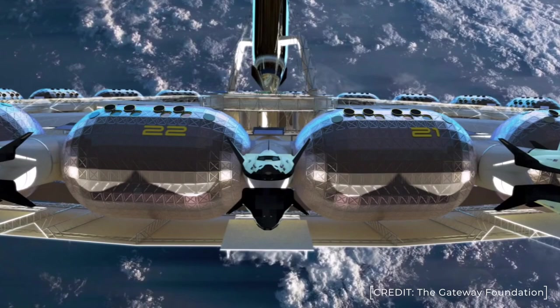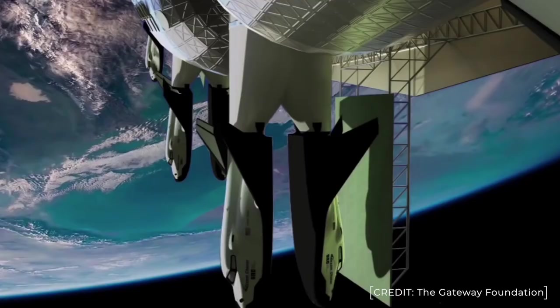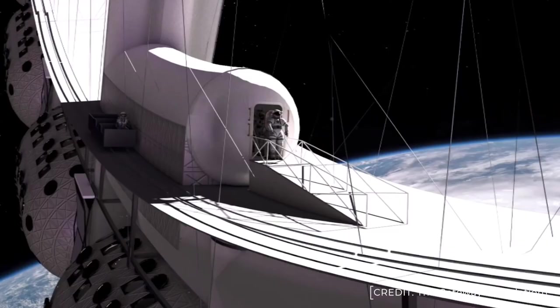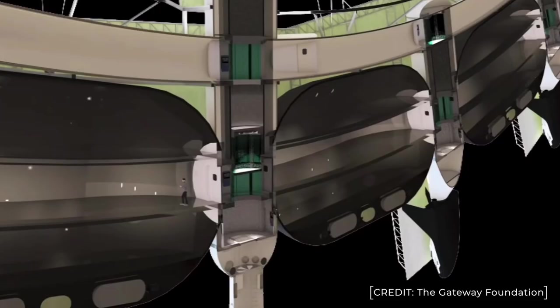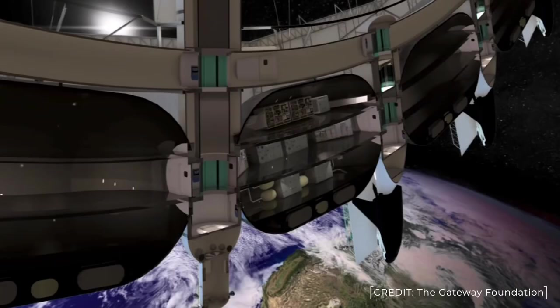They're going to kit it out with all the hotel amenities that you expect from a luxury property. So there'll be restaurants, entertainment, gym, spa, shopping. I think you'll even be able to take a spacewalk while you're there. So really, this is a luxury resort in space. Around the outer ring you can see these lifeboats or emergency return vehicles, as they call them. Now these to me all look like the Dream Chaser space plane from the Sierra Nevada Corporation.